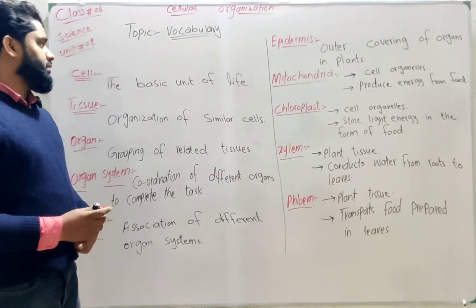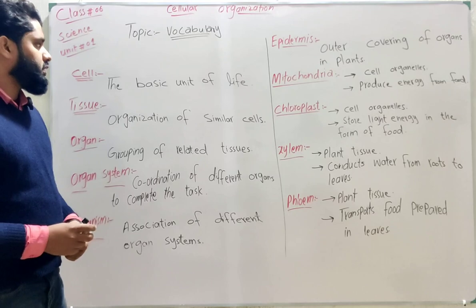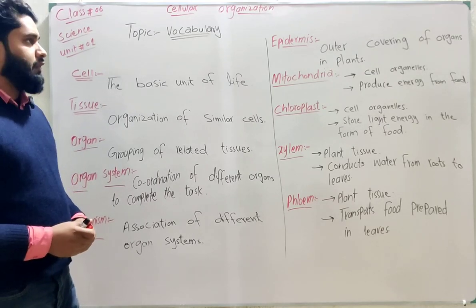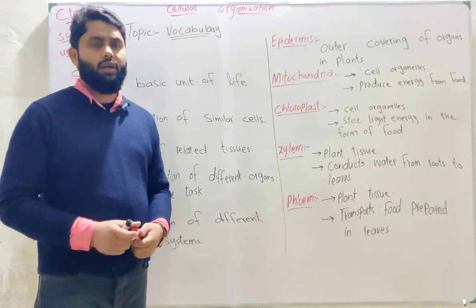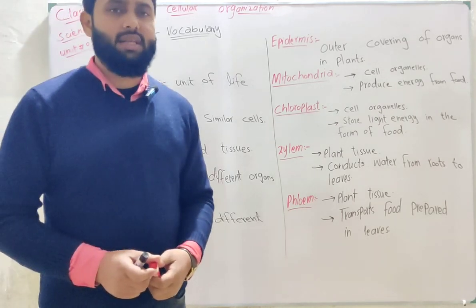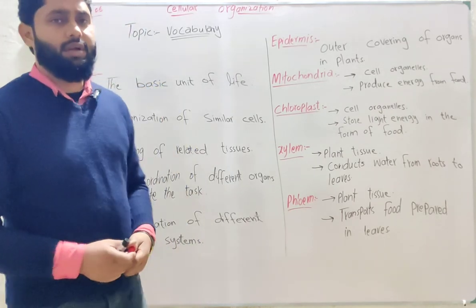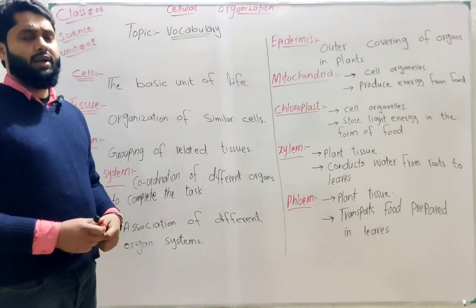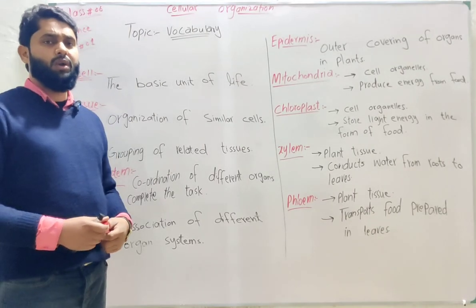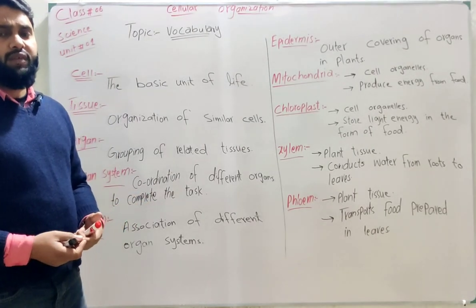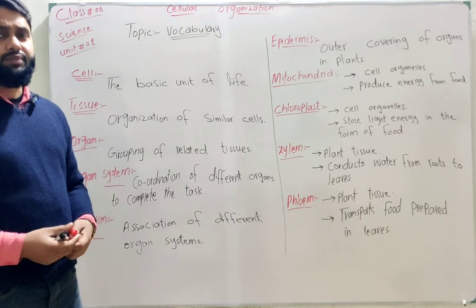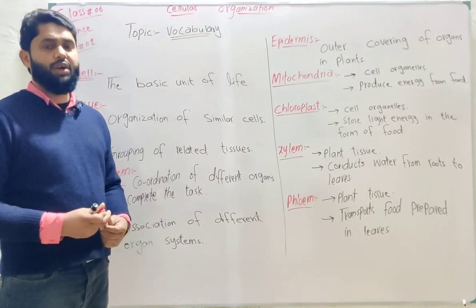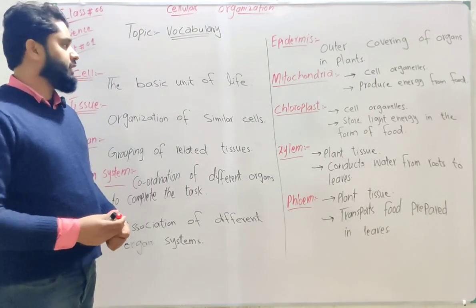Basic unit means the starting point of life is called a cell. If we see any building, we start from a single brick. Bricks combine to form a wall, and at last the whole building is complete. We say the first point, the starting point, is a brick.